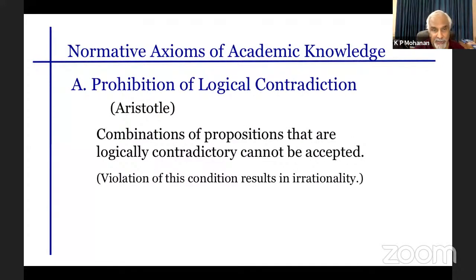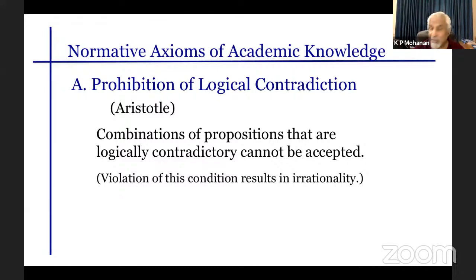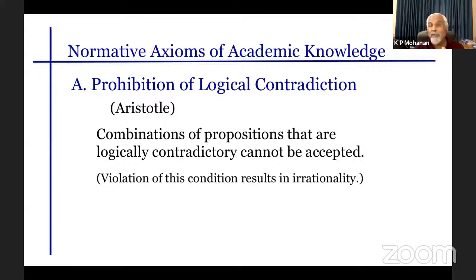The prohibition of logical contradictions means that combinations of propositions that are logically contradictory cannot be accepted as knowledge. A logical contradiction is a set of two propositions where one denies the other — 'the train comes at 10 o'clock' and 'the train doesn't come at 10 o'clock'; 'the earth goes around the sun' and 'the earth doesn't go around the sun.' You cannot accept logical contradictions in a body of academic knowledge. This is an extremely important quality control requirement, first stated by Aristotle.